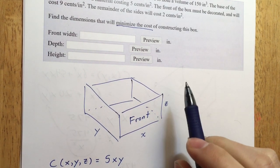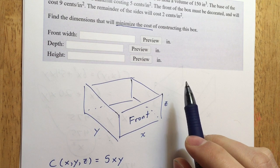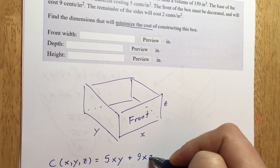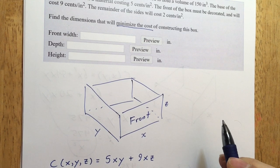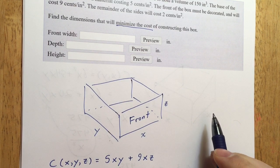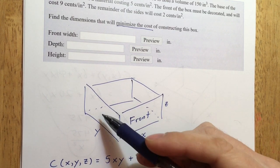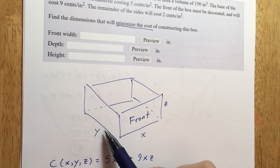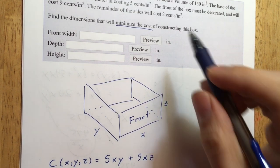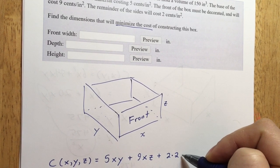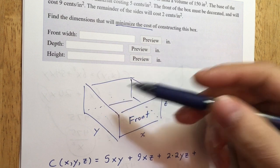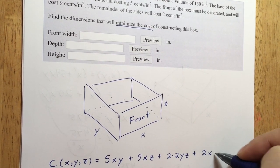The front of the box is the decorated side and will cost 9 cents per square inch. The area of the front is XZ, so that adds 9XZ. The two side panels have area YZ each, so together that's 2YZ multiplied by 2 cents, giving 4YZ. The back of the box also costs 2 cents per square inch and has dimensions XZ, so that adds 2XZ.